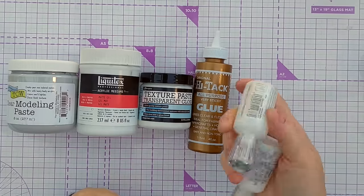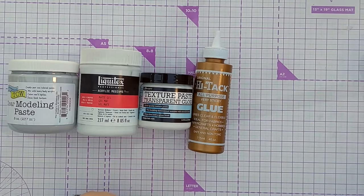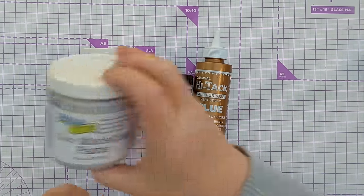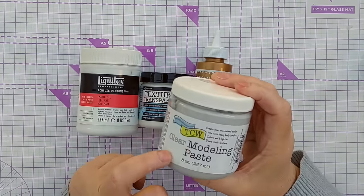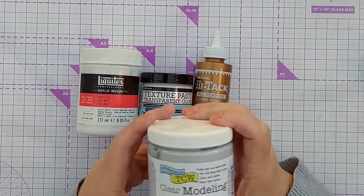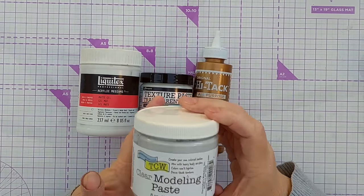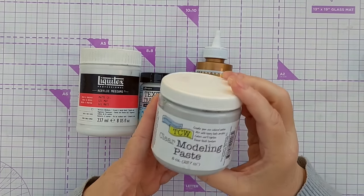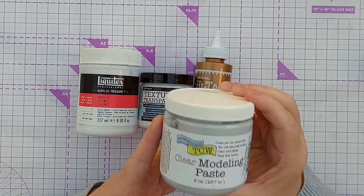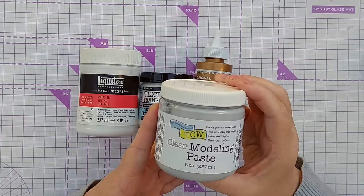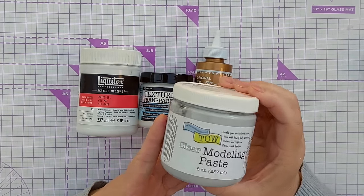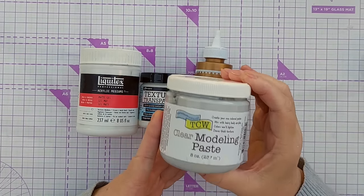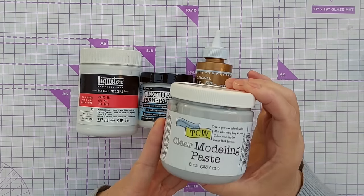The Nuvo Drops are thicker and worked quite well. The Crafters Workshop Clear Modelling Paste wasn't great—I had high hopes because it says it dries clear, but unless I've got a dodgy pot, it dries frosted, not clear.